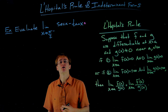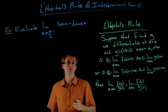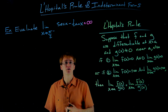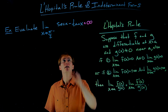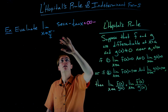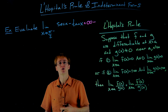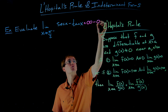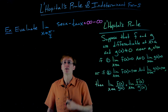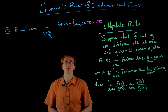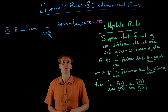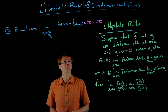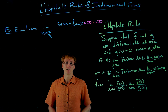If we look at the graph of secant and approach π/2 from the left, secant approaches positive infinity. We're subtracting the behavior of tangent as x approaches π/2 from the left — tangent also has a vertical asymptote there and also approaches positive infinity. So when we try direct substitution, we end up with the indeterminate difference infinity minus infinity.